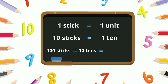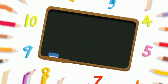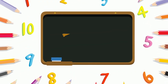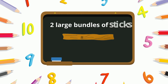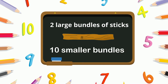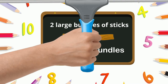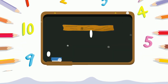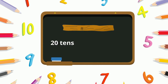Now we have two large bundles of sticks, each made of ten smaller bundles. That means we have a total of twenty tens of sticks, which are equal to two hundred.